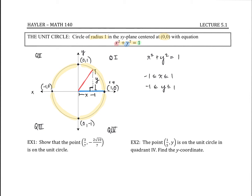The circumference of a circle is C = 2πr. But for the unit circle, our radius is 1. So when we plug that in, we get that the circumference of our unit circle is 2π, which means this whole distance — if I start here and travel all the way around — I'll come back having made a distance of 2π.